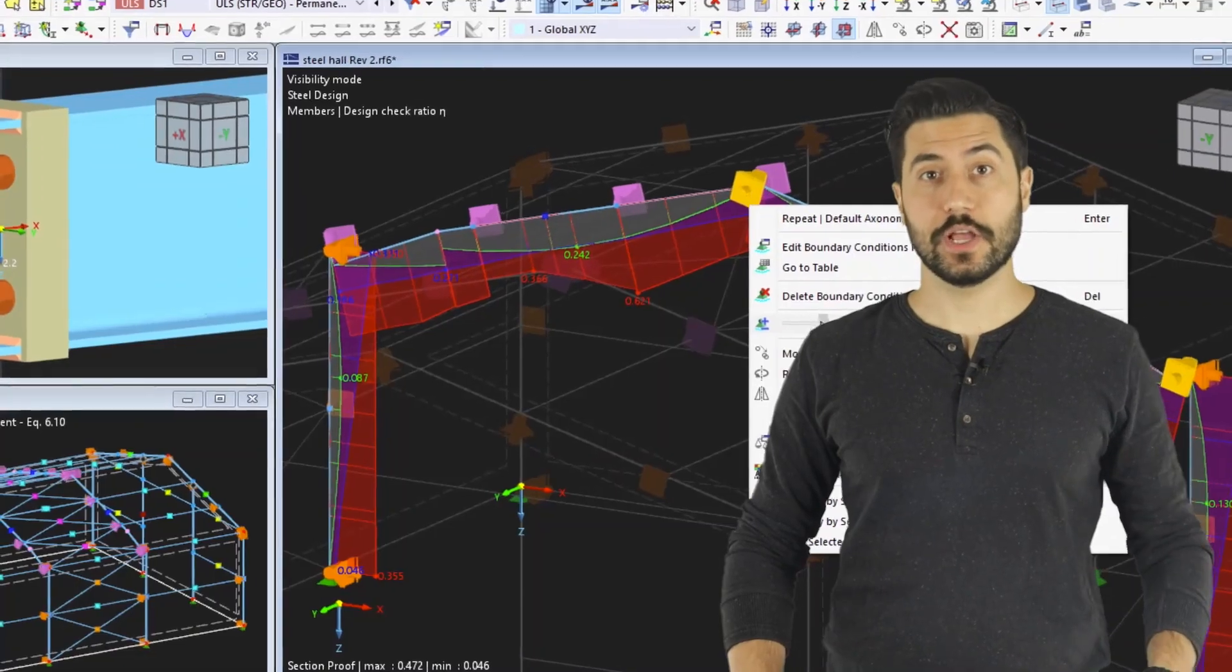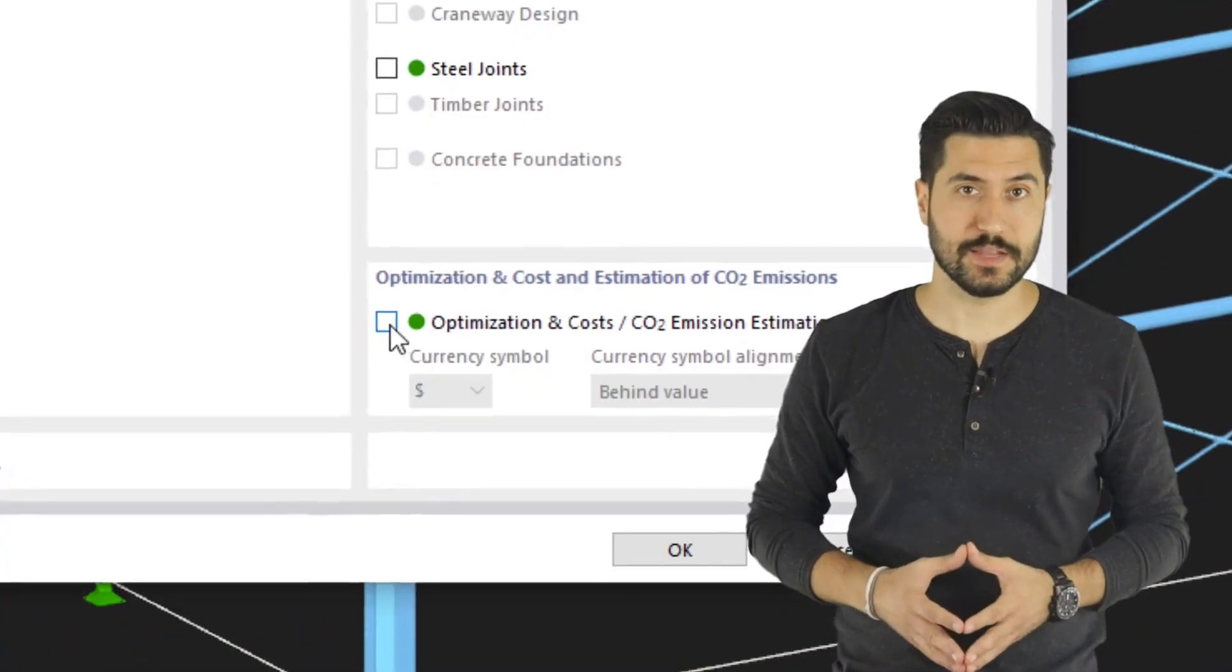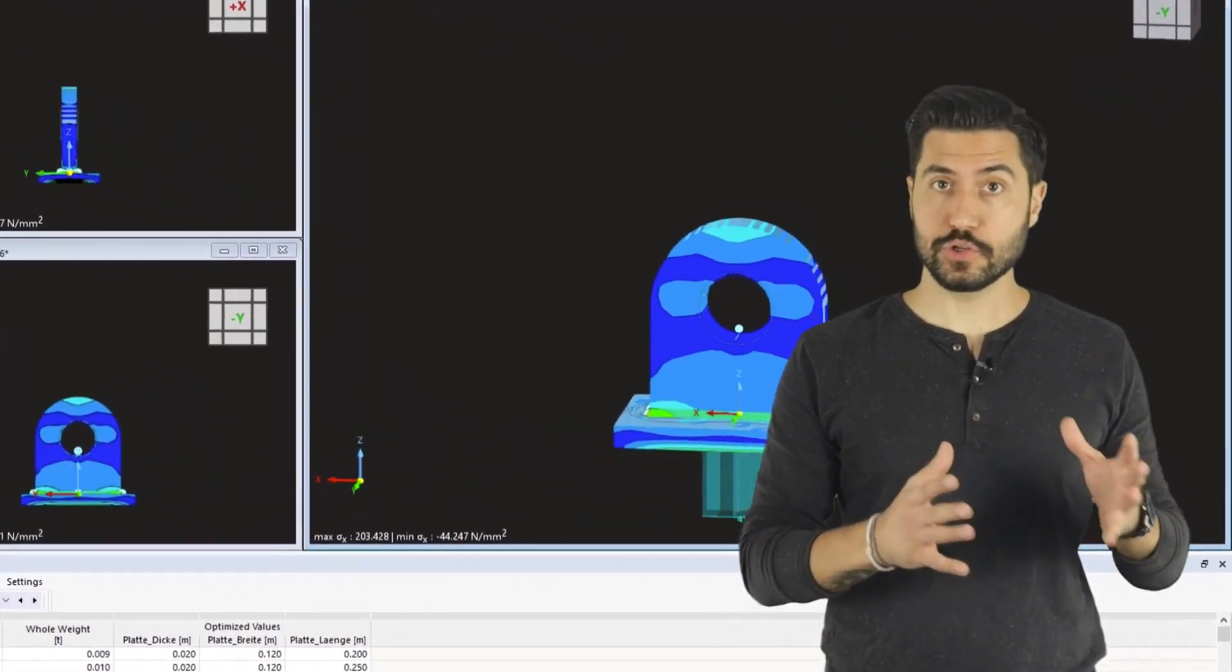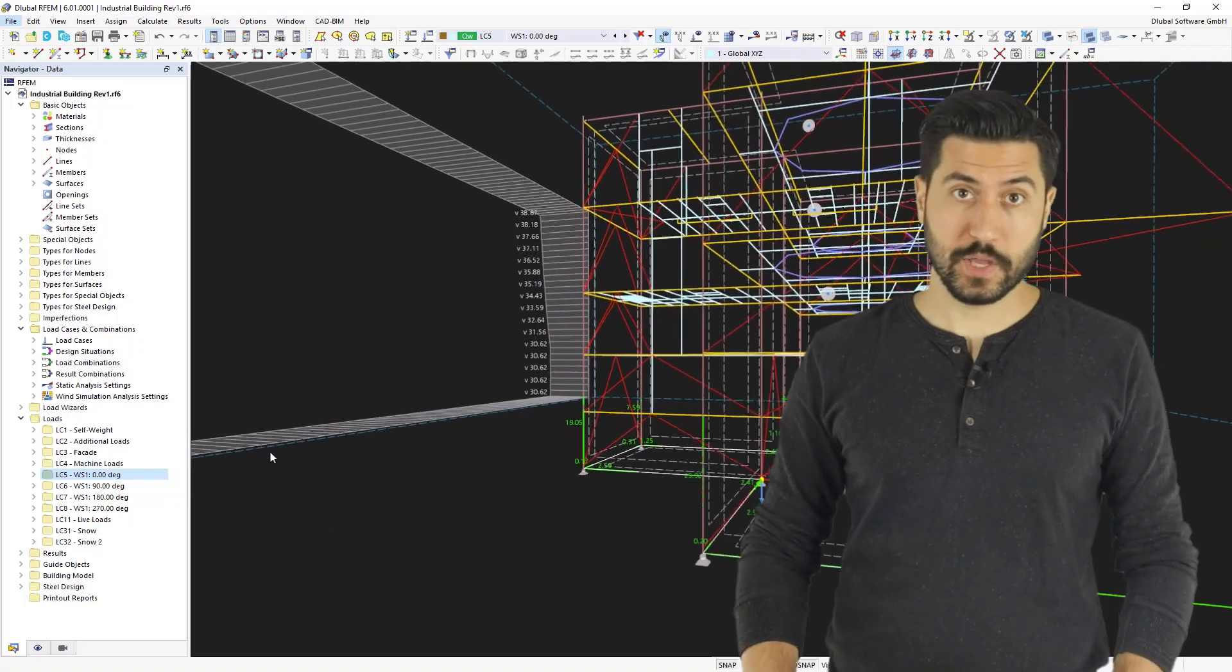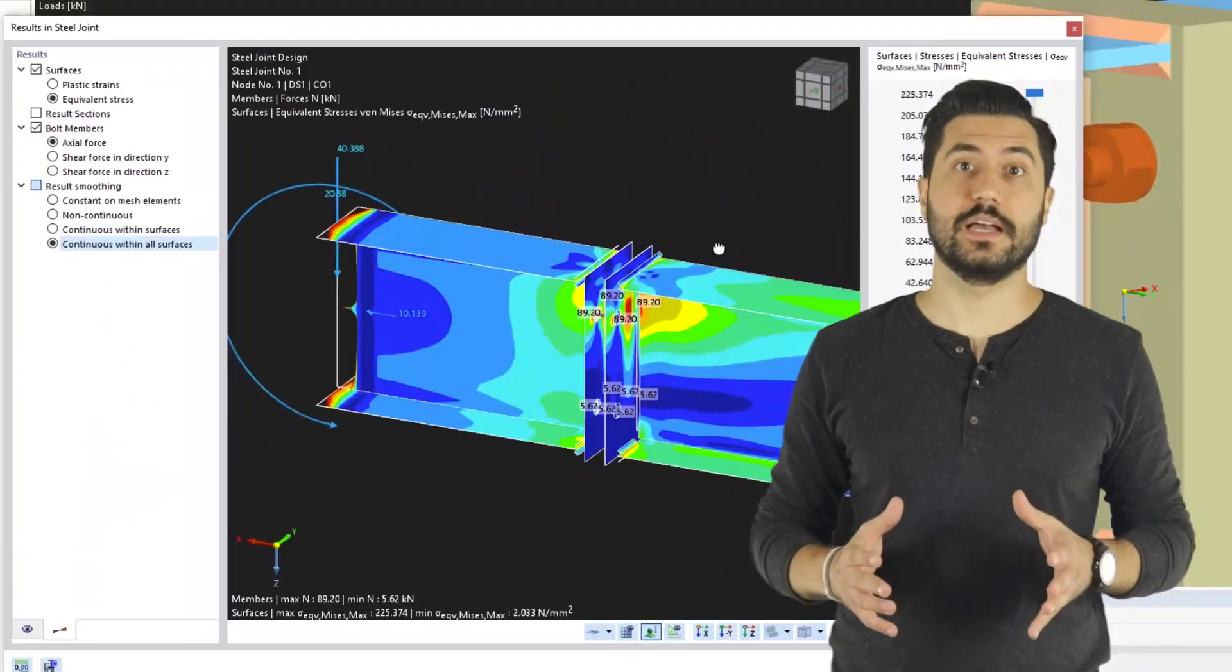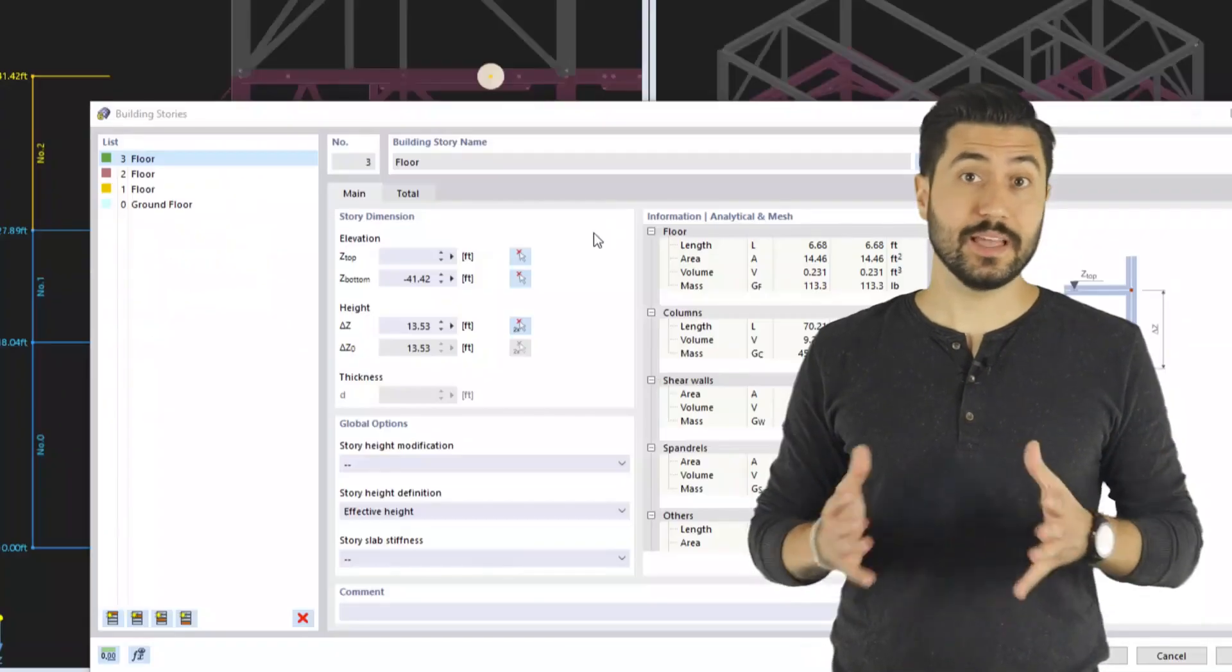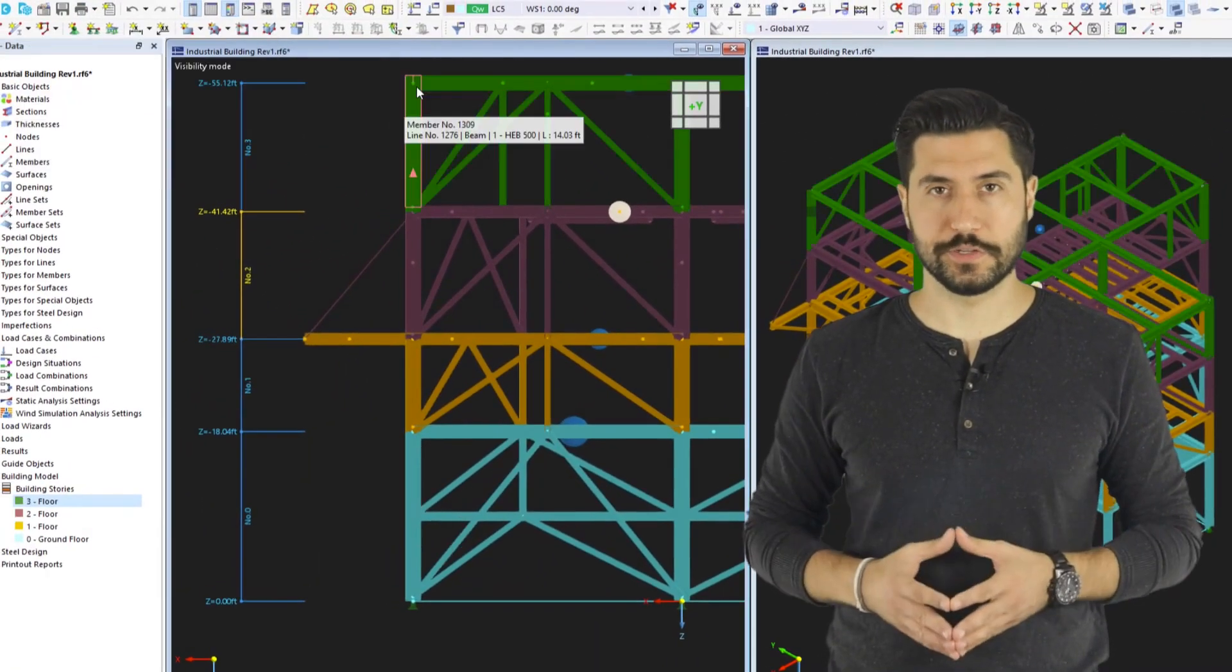RFEM 6 offers a great variety of changes and improvements that make working even faster and more pleasant. Such as for example merging the error modules with the software. In this way you can define certain parameters of the design during the modeling in order to save time, or you can create lightning fast calculations and effective printout reports.